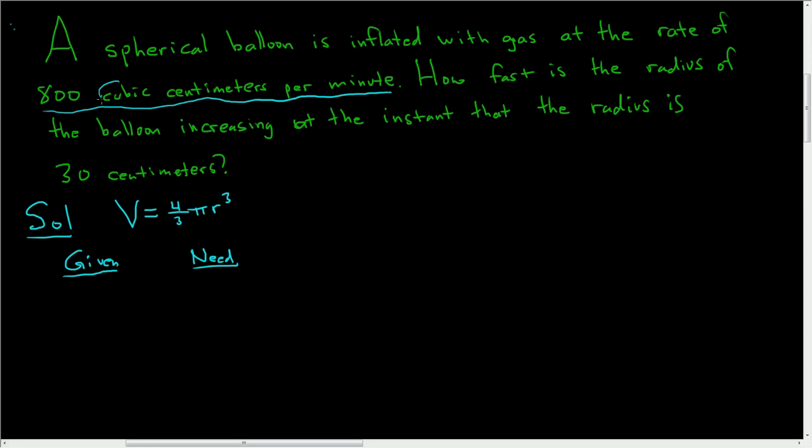So the key word there is cubic. This is telling us something about the rate of change of the volume. So we're given that dV/dt is equal to 800. We know it's volume because it says cubic, and we know it's a rate of change because it says rate.